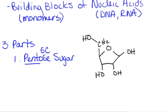We can number these carbons that we have in the ring, and this does become important later on. This is going to be the number one carbon here, then two, three, four, and five. So you can see that we do have five different carbons — that's the pentose sugar part of it.